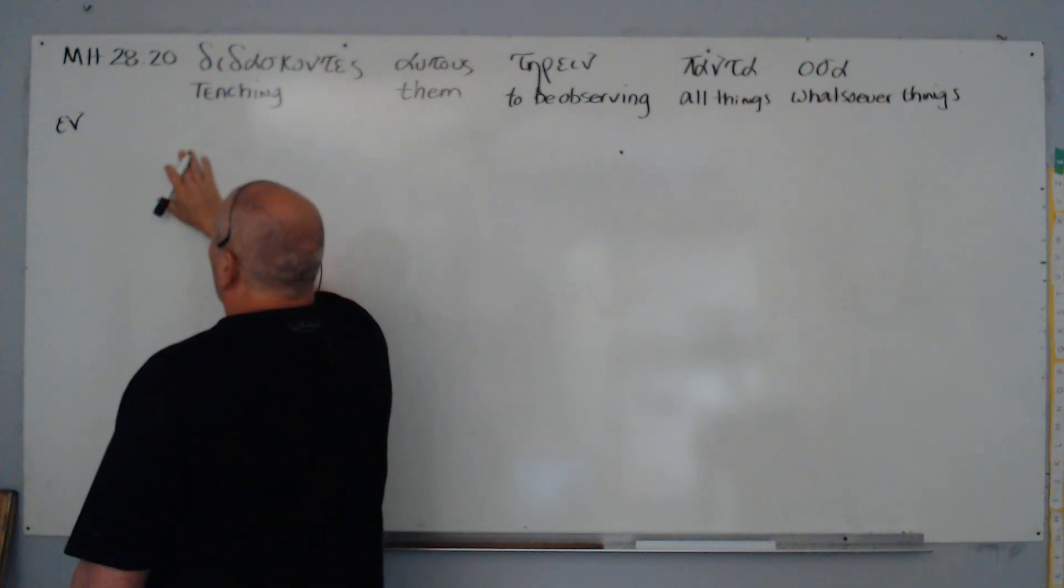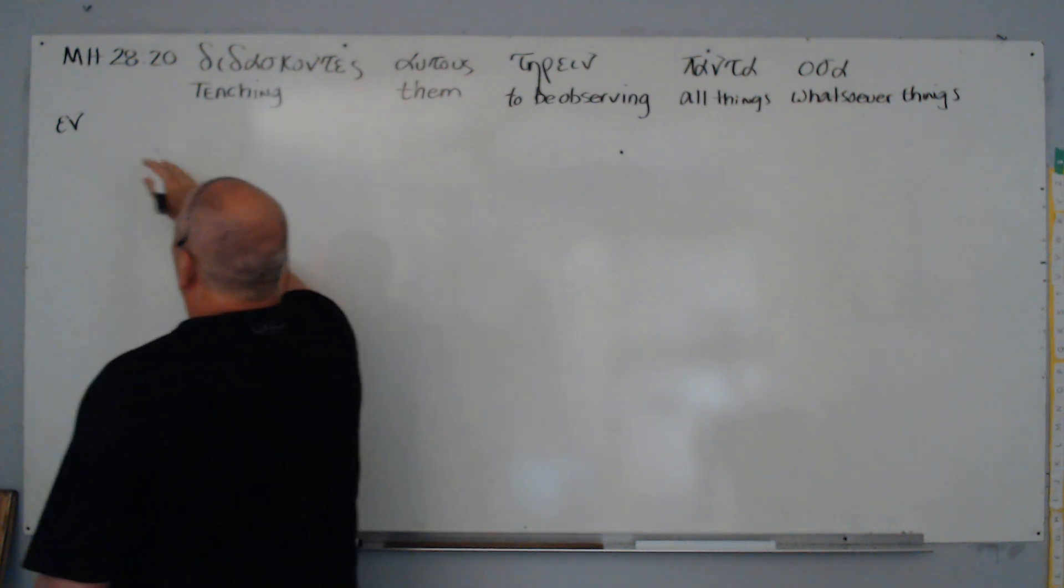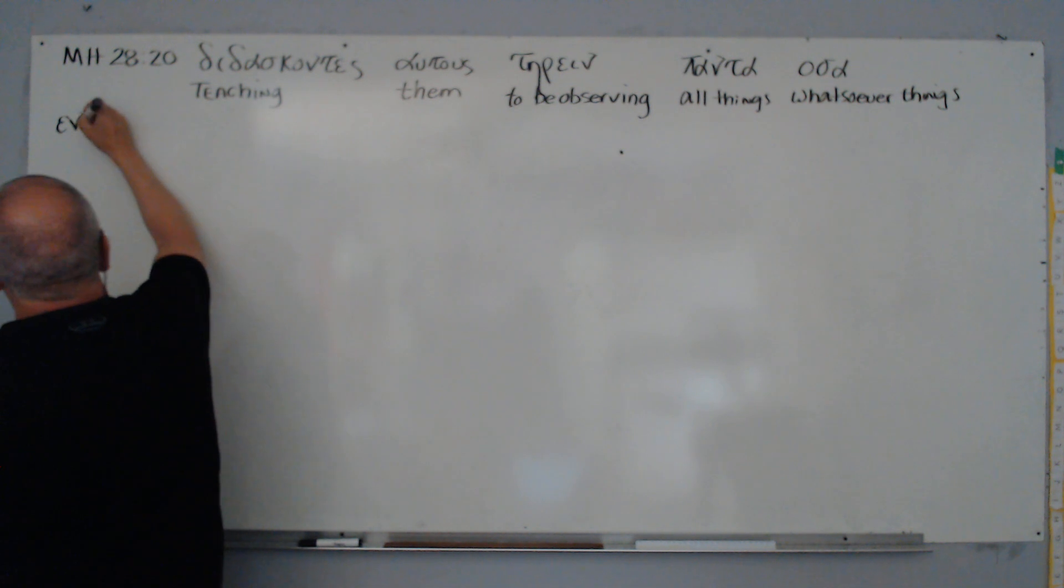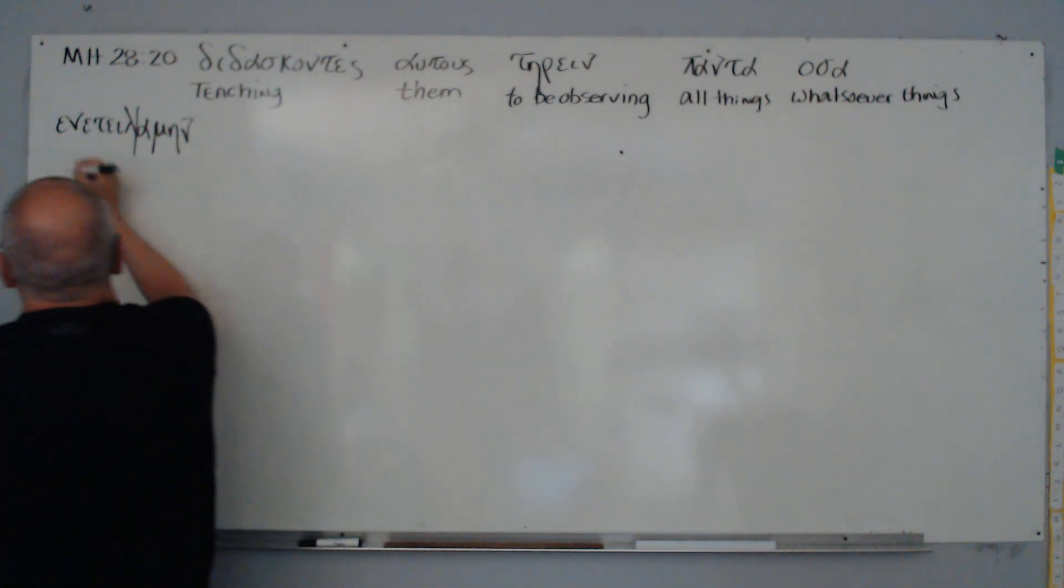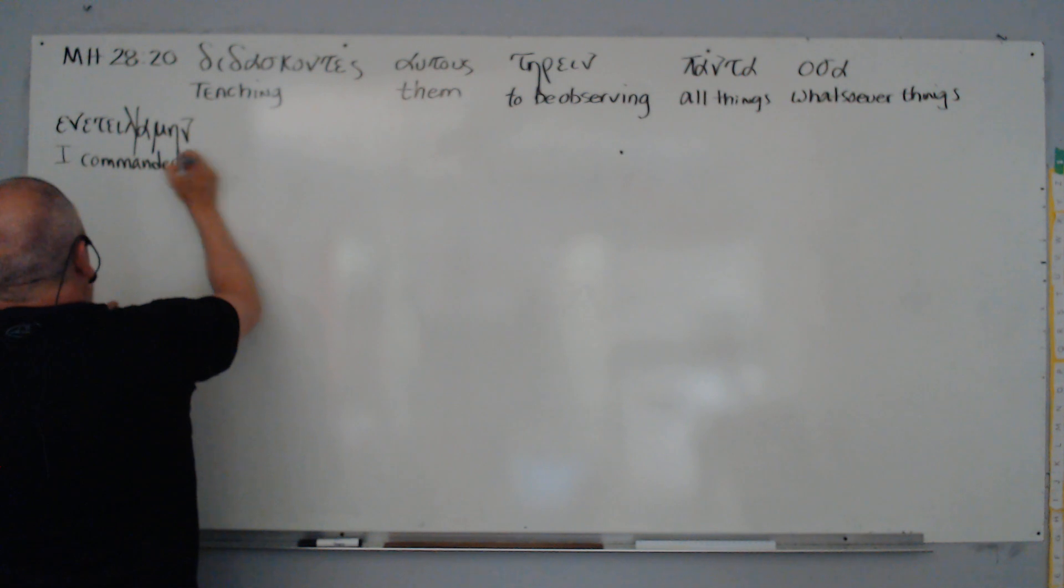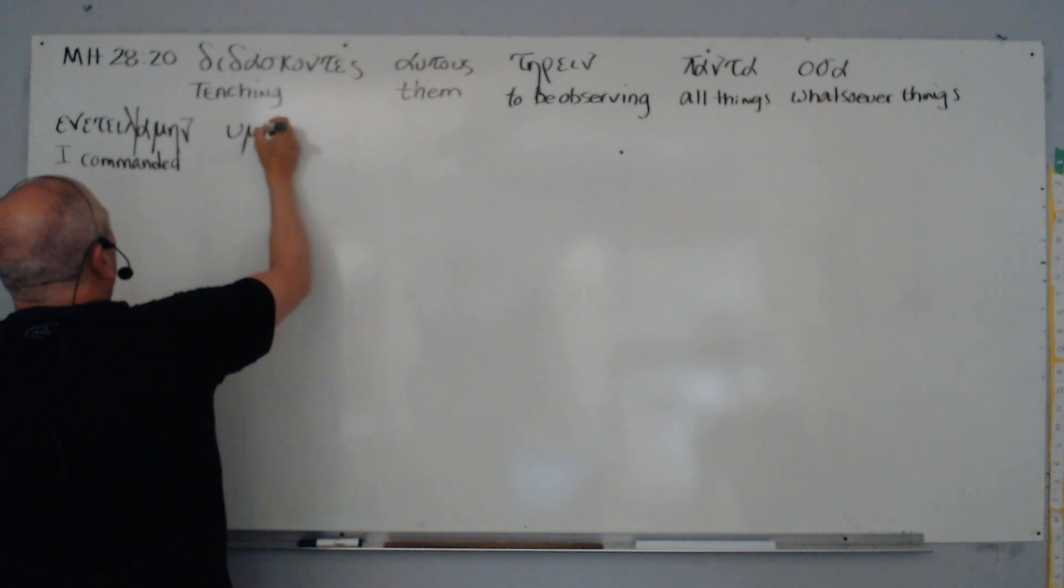And this is the verb, it's a deponent verb, middle passive form, active, here it's aorist. Enteilamen. We get the noun entolē. So I commanded hēmin, to you all, to you all.